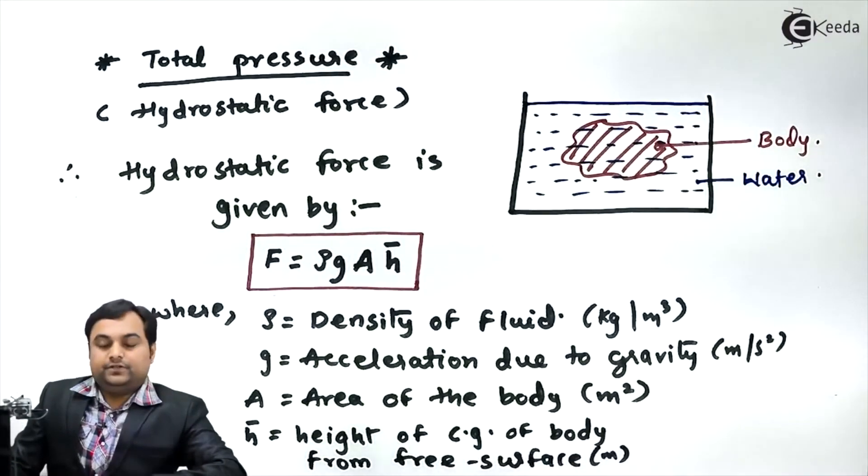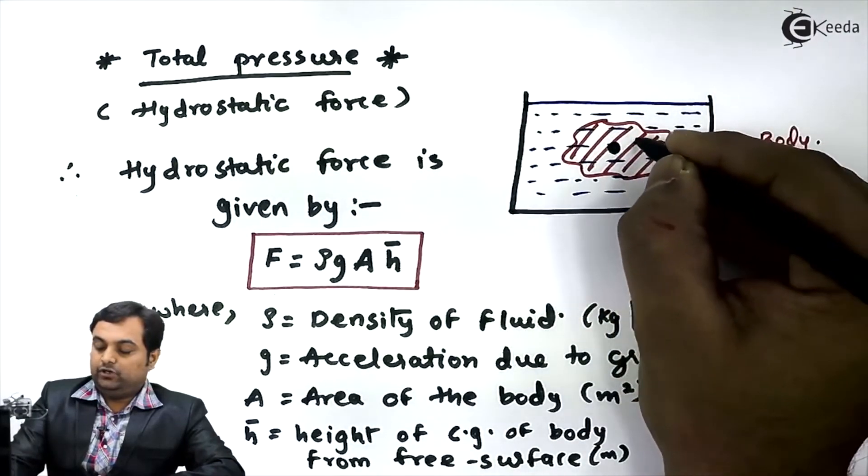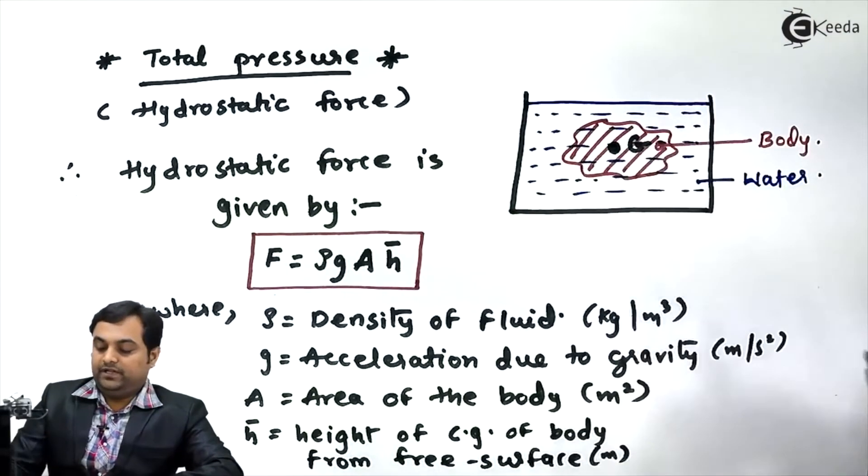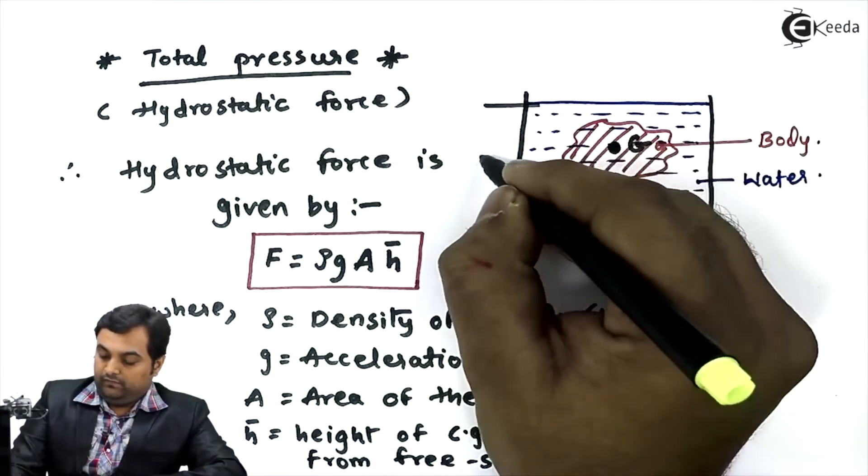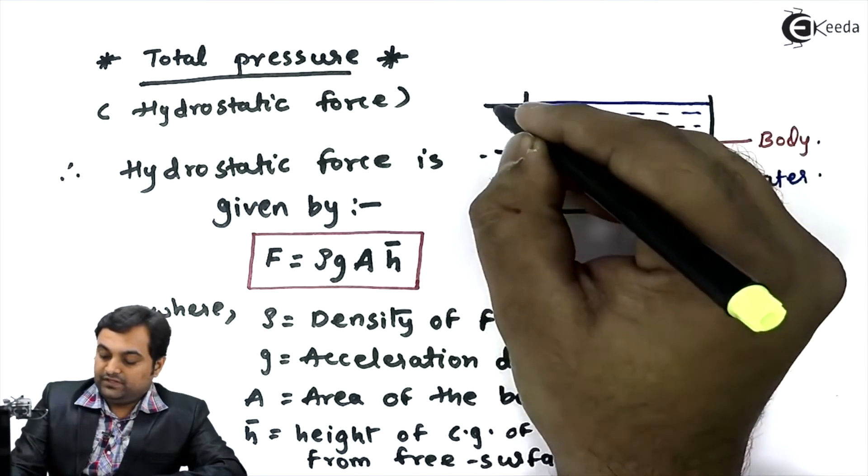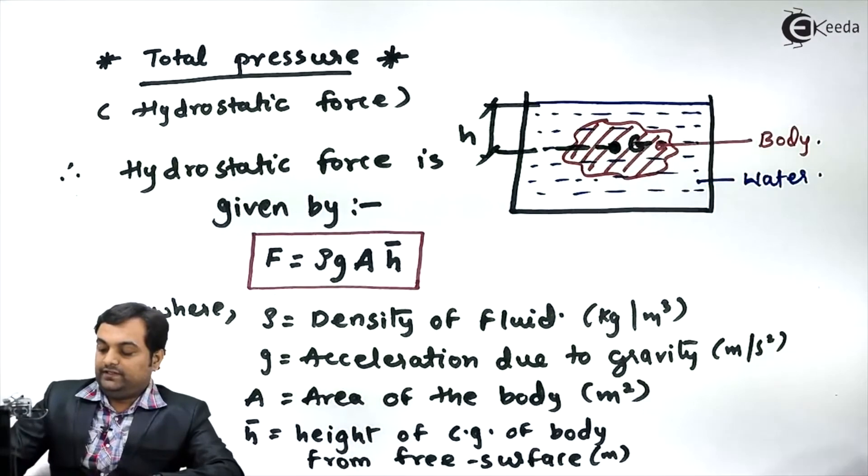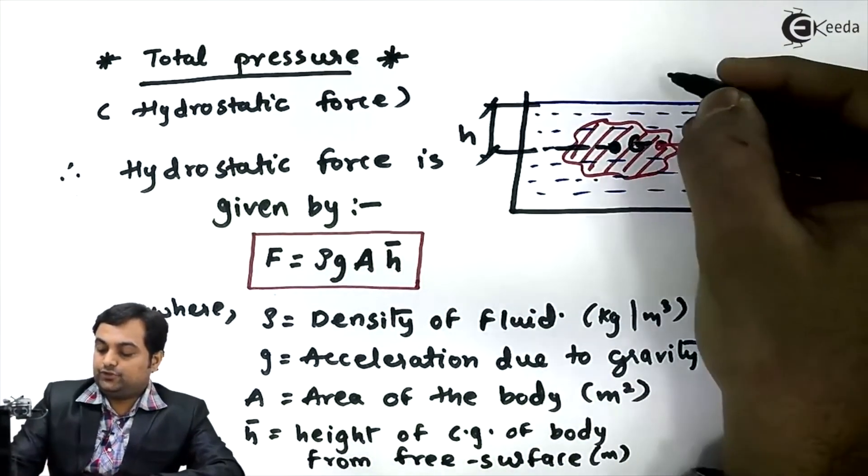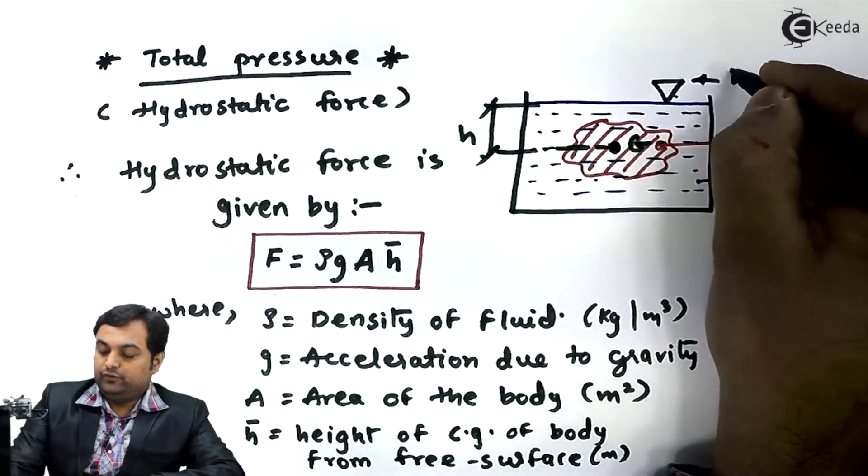It would be in meters. If we have a body, there is a point called center of gravity, denoted by G. The distance of the center of gravity from the free surface is denoted by H̄. This free surface is exposed to atmosphere - this symbol indicates that the fluid is exposed to atmosphere.